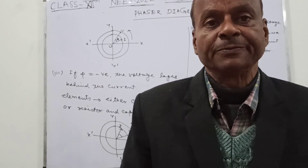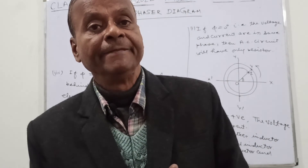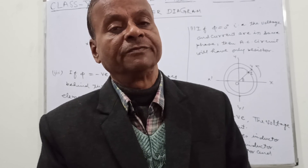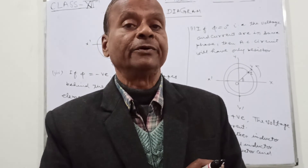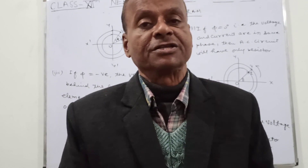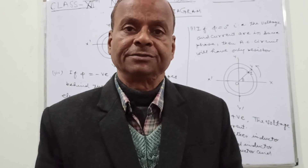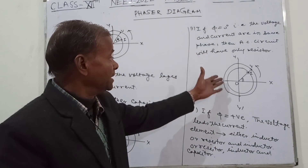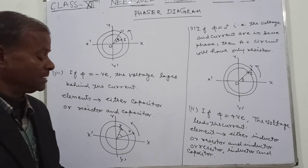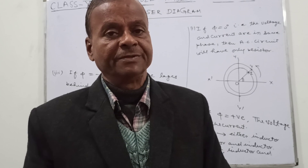This is also asked in competitive exams — if the phase difference is plus 45 degrees, minus 45 degrees, plus or minus 30 degrees, or plus or minus 40 degrees, then which elements may be present in the AC circuit. You can find that easily by having knowledge of this phase difference. In later lectures, I will tell you how φ changes according to the elements used in the AC circuit. Thank you very much — please like, share, and subscribe to this video.